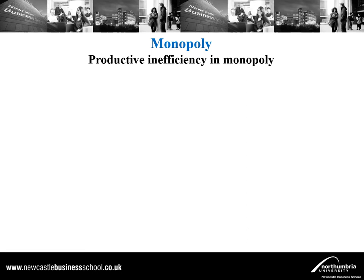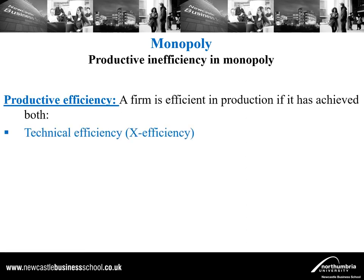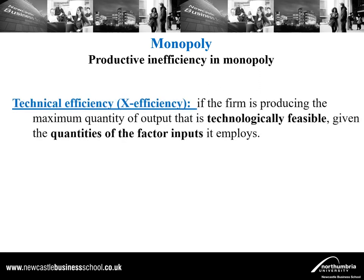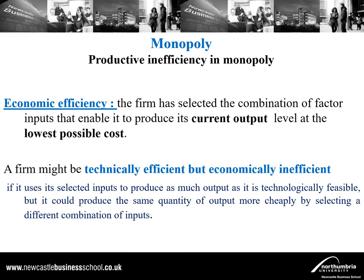What other inefficiencies arise? We have productive inefficiency in a monopoly. A firm is productively efficient if it achieves both technical efficiency and economic efficiency. Technical efficiency relates to when a firm produces the maximum quantity of output that is technologically feasible given the quantities of factor inputs it employs. Economic efficiency takes place when the firm has selected the combination of factor inputs that enables it to produce its current output level at the lowest possible cost. A monopolist might not be economically efficient.